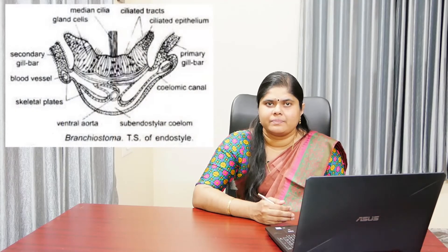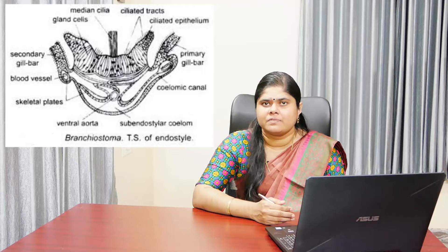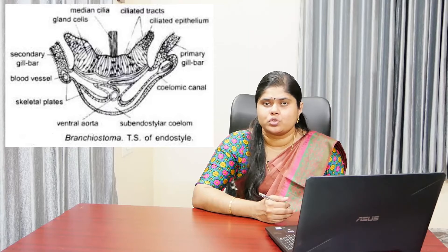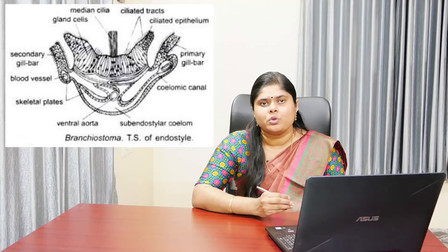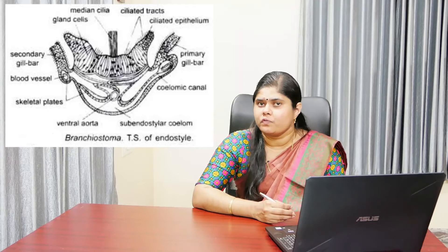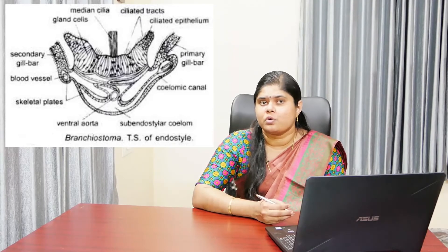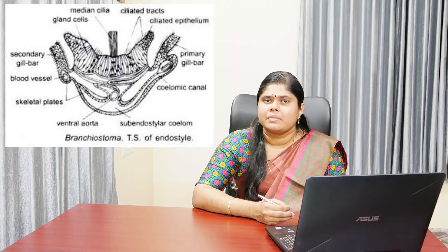Extending mid-ventrally along the entire floor of the pharynx is a shallow groove called the endostyle. The endostyle is lined with four longitudinal tracts of ciliated cells. Alternating with the ciliated tracts are intervening zones of mucus-secreting glandular cells, and their mucous secretion is used for feeding. According to Barrington, the endostyle is a precursor of the thyroid gland, because like the thyroid gland of craniates, the endostyle concentrates iodine in itself.